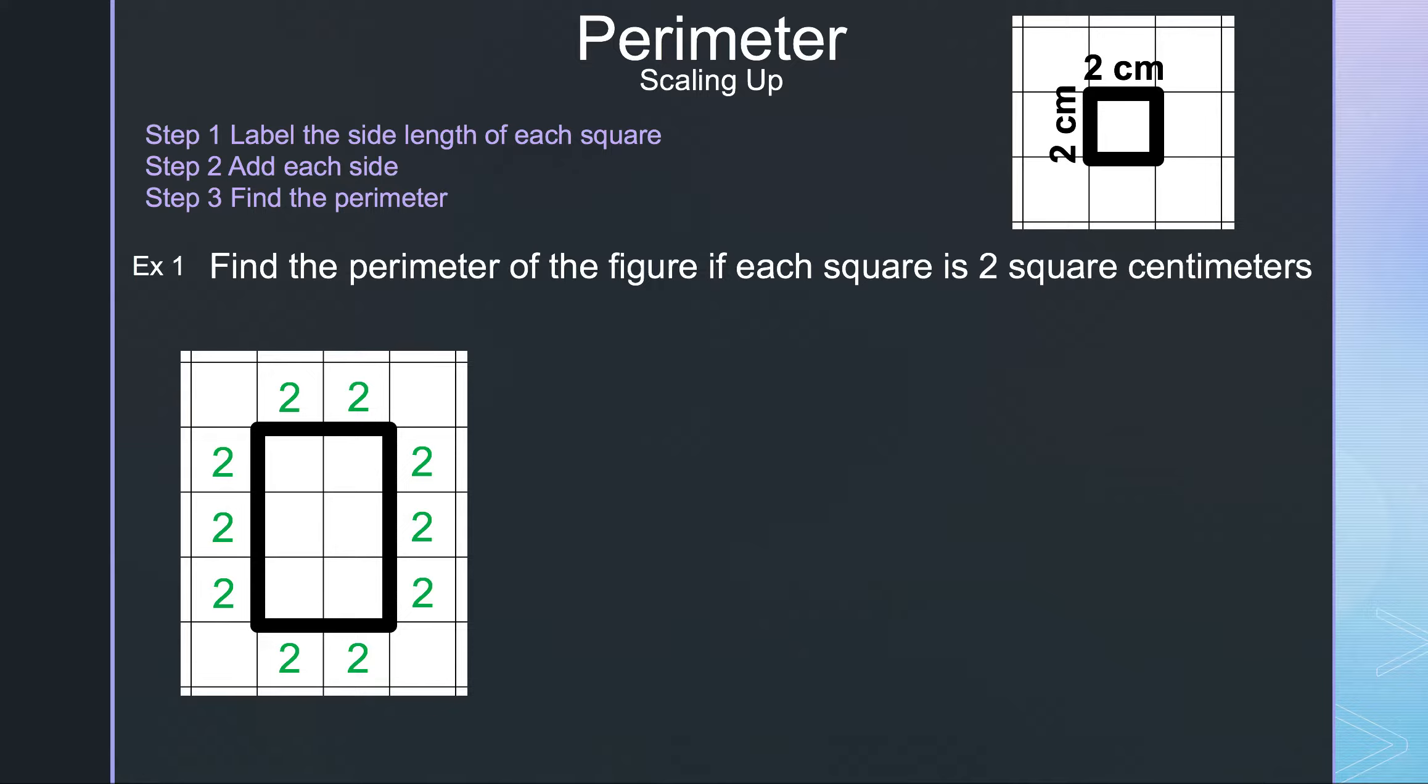Now we can add the numbers together. On the top you have two 2's which gives me 4. Working our way clockwise, we have three 2's which gives me 6, then two 2's for the bottom which gives me 4, and three 2's for the left which gives me 6.